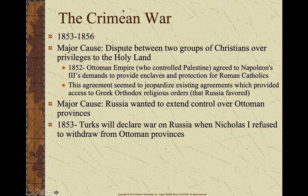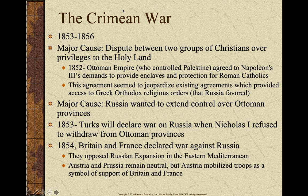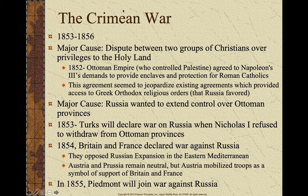In 1853, we're going to see the Turks declare war on Russia. Nicholas I, the Tsar of Russia, is going to refuse to withdraw from Ottoman provinces. And in 1854, we're going to see Britain and France respond by declaring war on Russia — they are trying to maintain that balance of power and don't want Russia to seize control of the eastern Mediterranean. Austria and Prussia remain neutral, partly because German unification is getting ready to happen. In 1855, Piedmont-Sardinia is going to join the war supporting France and Britain against Russia — make a note of that, circle it, it's important.